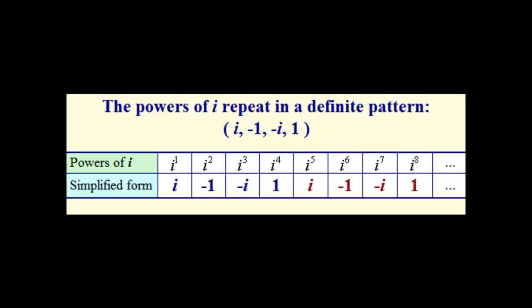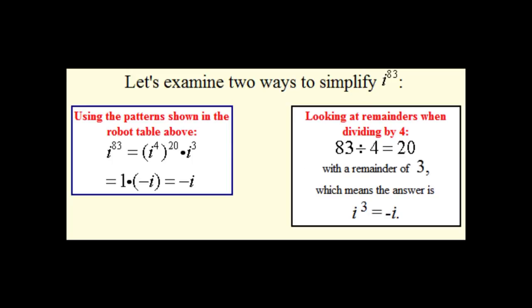Here is an example in which i to the 83rd power is simplified. If you use the powers of i table, you can simplify i to the 83rd. Divide 83 by 4, and you get 20 with a remainder of 3. Use this remainder as an exponent of i, and you'll get i to the 3rd, which is equal to negative i.